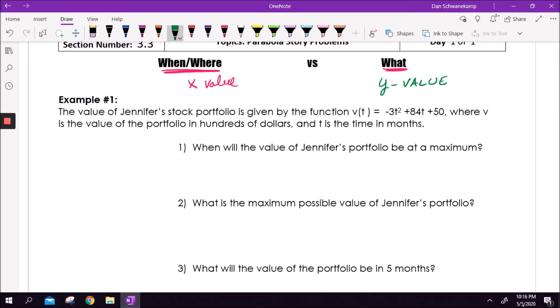Let's look. The value of Jennifer's stock portfolio is given by this function, v(t) = -3t² + 84t + 50, where v is the value of the portfolio in hundreds of dollars and t is the time in months. When will Jennifer's portfolio be at a maximum? That's the key to this problem - understanding what does this look like? It's a quadratic, that makes it a parabola. It's a negative 3t² parabola. So which way is it going to open? It's opening downward. So that's what this is. Visualizing that equation is helpful here.